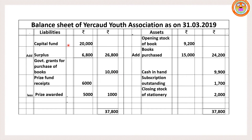On the liability side: capital — use the formula capital plus surplus (or capital less deficit). Opening capital fund shows 20,000; add surplus 6,800 to get 26,800. Government grants for purchases of books is 10,000 — capital receipt shown here. Price fund receipt received 6,000; prices awarded 5,000 — so 6,000 minus 5,000 gives remaining balance of 1,000. Total of all three liability items: 37,800. Asset side also totals 37,800 — balance sheet is balanced.